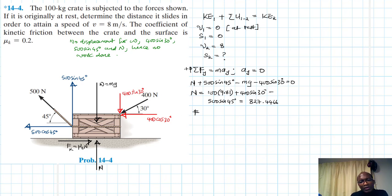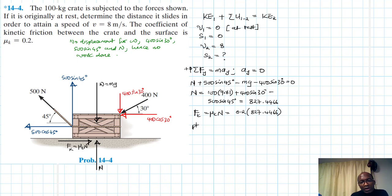The friction force equals μk times N, which is 0.2 times 827.4466. So back to the work-energy equation: KE1, the initial kinetic energy, equals one-half m v1 squared.